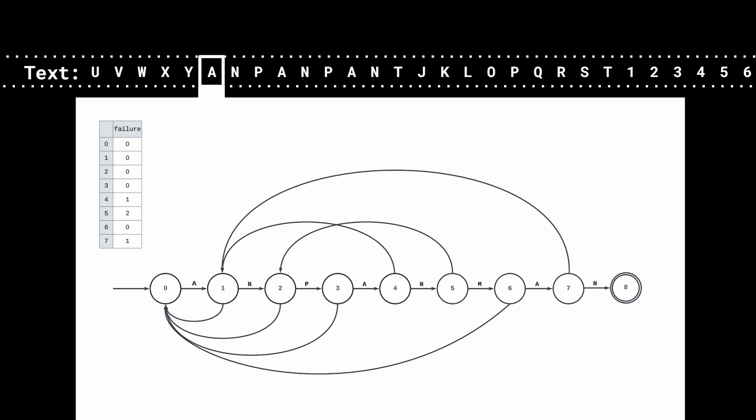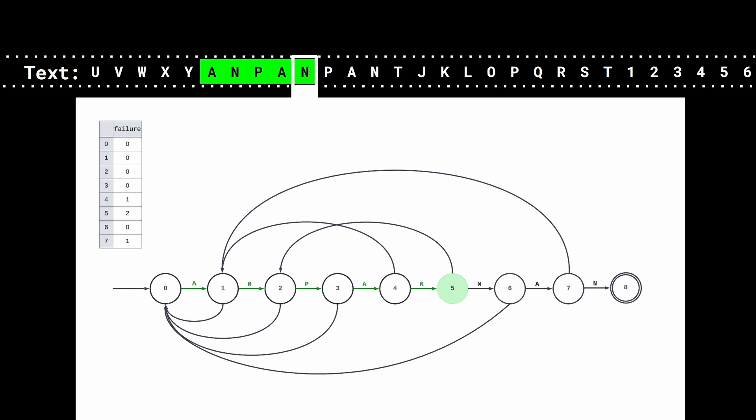For example, let's say that we have the following text and we are looking for the pattern 'anpanman'. If we read A, N, P, A, N, we reach state 5. Now if the letter is a P, then it fails the comparison, so we don't move to the next state, but follow the failure link, which leads to state 2.